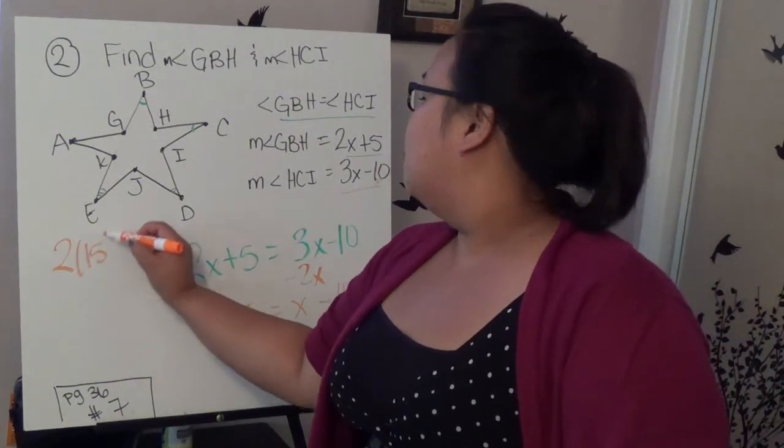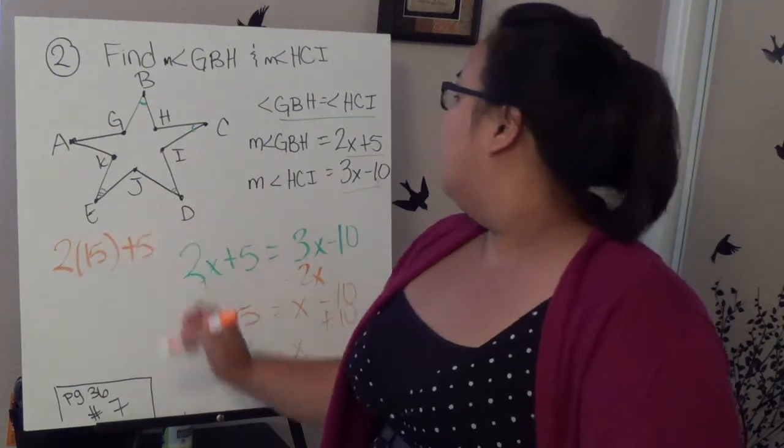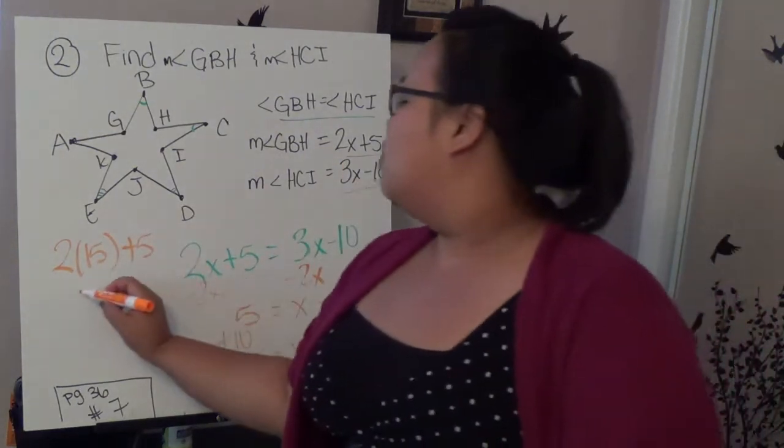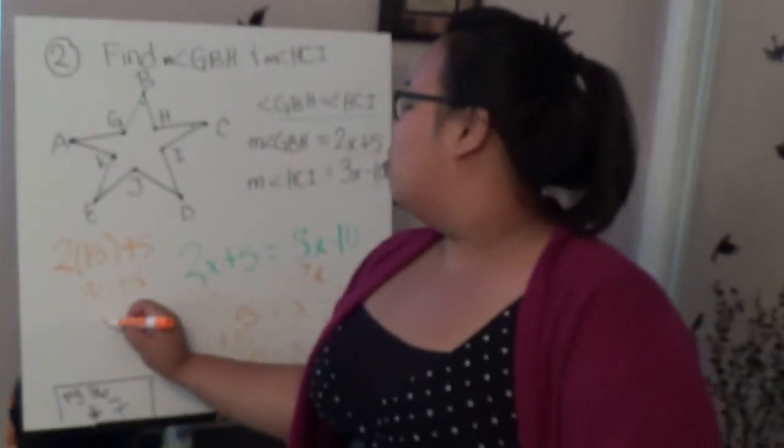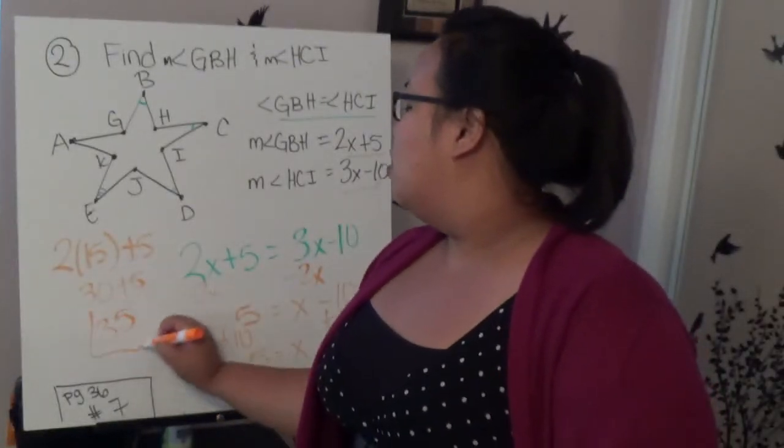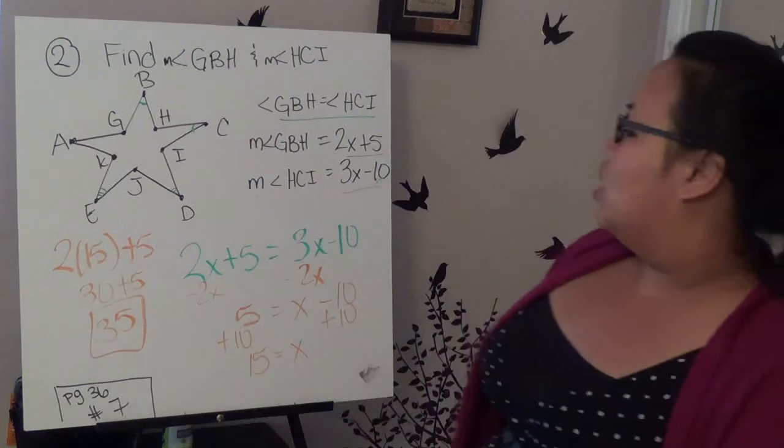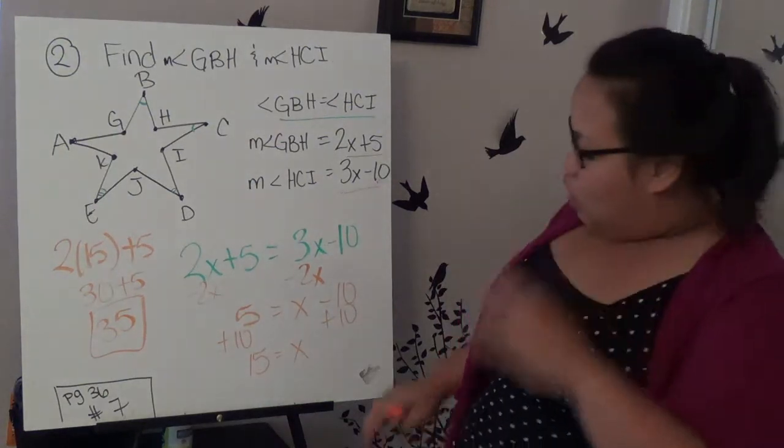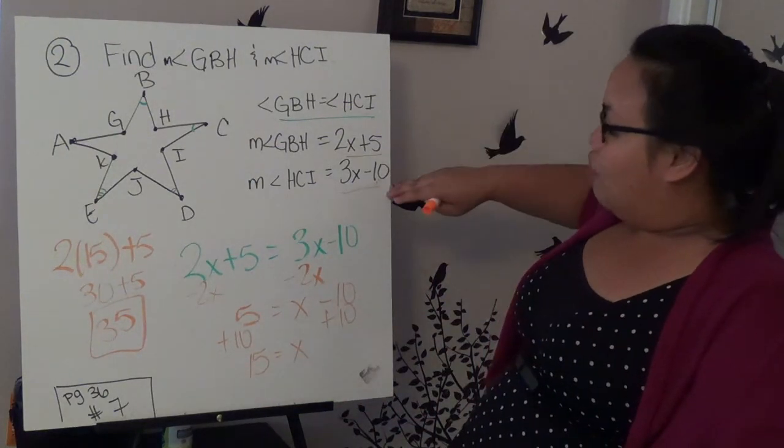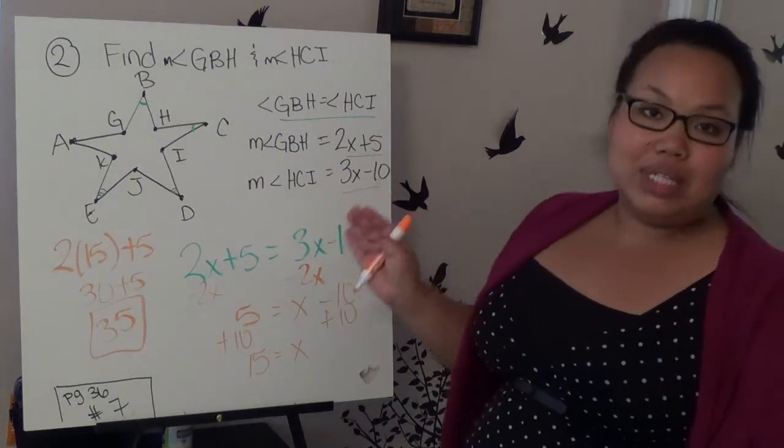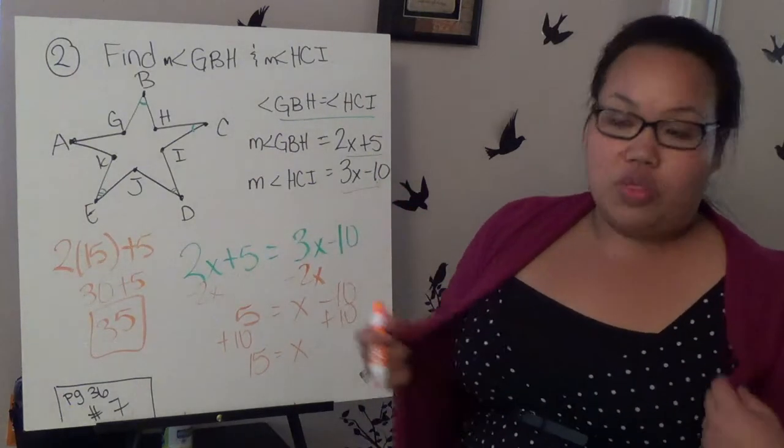So in this case, if I just plug in 15 to either one, then I should get the right answer. So let's choose the top one. 2 times 15 plus 5. 2 times 15 is 30 plus 5, and so 30 plus 5 is 35. And that should be the answer. If you're not sure if you did it right, you can always take it and put it in for the second one, and they should be the same exact answer. If they're not, then you've got the wrong x.